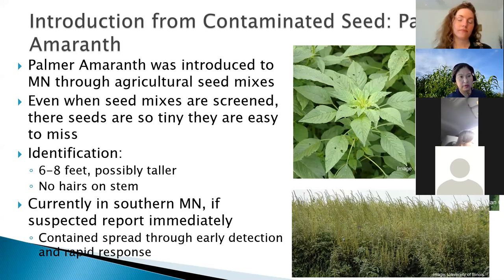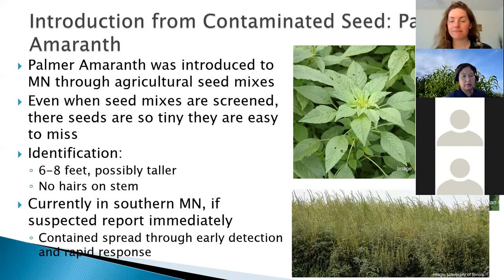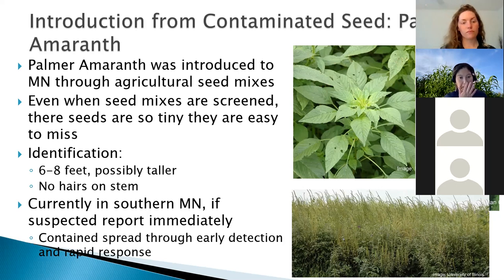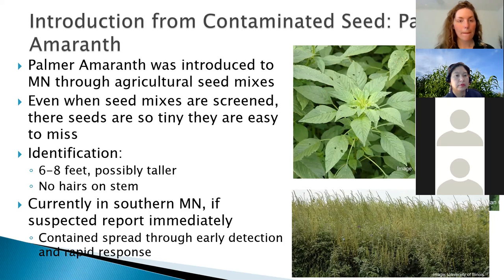Palmer Amaranth is typically six to eight feet tall or taller. It doesn't have any hairs on the stem, and it's really difficult to identify without the flower — it kind of looks like a bunch of other pigweeds in Minnesota. Once they get to that stage where they're all over the field, they're really tall and pretty easy to detect. The best way to manage Palmer Amaranth is to find it early and then hopefully you'll be able to mow it, weed whip it, or clip it down.